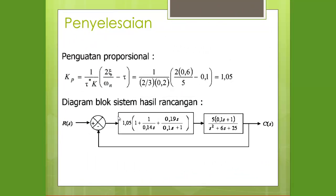Nilai KP dicari dengan cara KP = TOI / (TO*·K), di mana TOI = 2ζ/ωn − T, sehingga diperoleh KP = 1.05. Diagram blok kontrol PID Modifikasi dibuat dengan nilai KP, TOI, TOD1, TOD2, dan persamaan plant order kedua. Untuk membuktikan apakah hasil perancangan dengan nilai KP, TOI, TOD1, dan TOD2 bisa menghasilkan error steady-state = 0, bisa dibuktikan dengan simulasi Simulink MATLAB. Simulasinya bisa dilihat dalam deskripsi video di bawah atau diklik di video berikut.